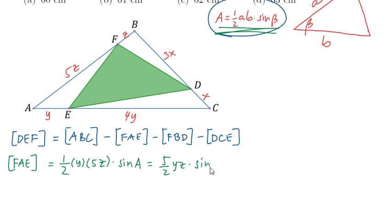The area of triangle FBD is equal to 1 half times 3x times z times the sine of angle B, or 3 over 2 XZ sine B.